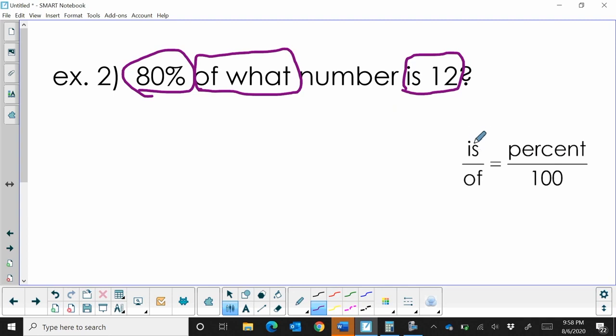So is is 12. Of is the unknown. Percent is 80. So let's set this up. 12 over the unknown of is equal to 80 over 100.